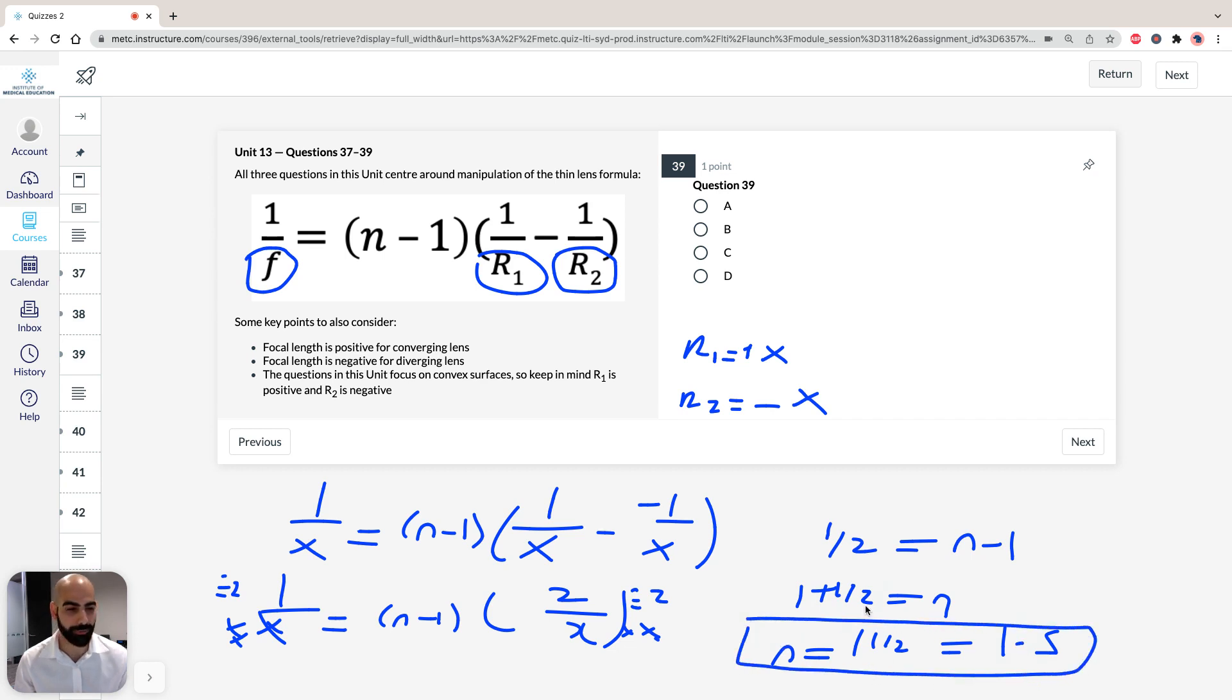So our answer, therefore, for 39 has to be B. Now, as I said in the beginning, ACE is being nice here, because I know in practice test 2 they ask some questions about refraction of light from convex or concave material, and that opens up a whole can of worms with imaginary images, real images, the size of the image, where's the focal length, where are the rays of light going to go. But in this instance, we just had to use the thin lens formula.